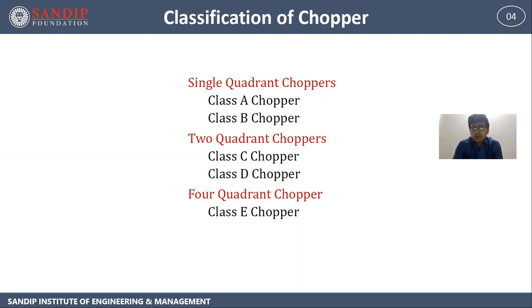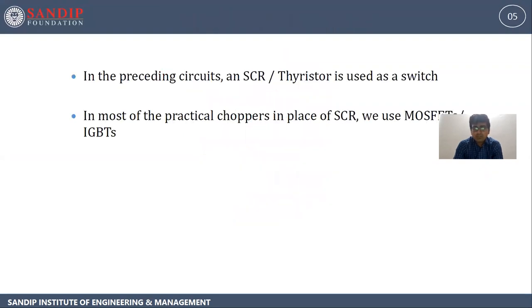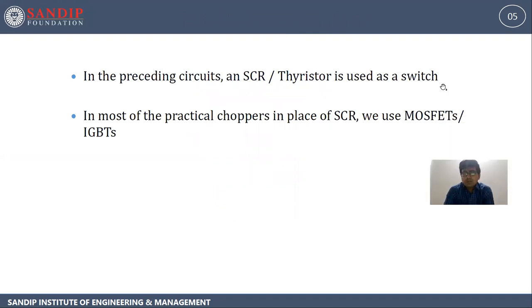Choppers are classified into single quadrant choppers. In single quadrant choppers, it is of two types: class A chopper and class B chopper. And four quadrant chopper, which is subdivided into class E chopper. Mostly, to theoretically understand, we can use SCR or any thyristor as a switch. But for practical applications, we go with power MOSFET or IGBT in place of SCR for use as a switch.